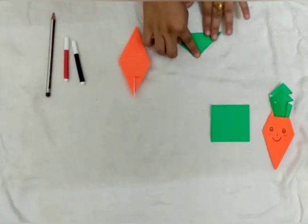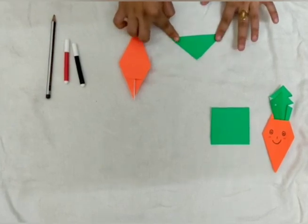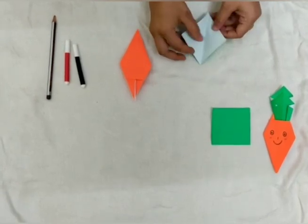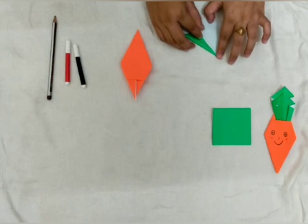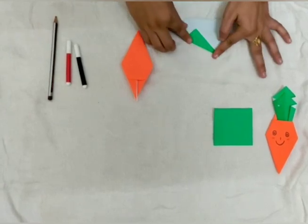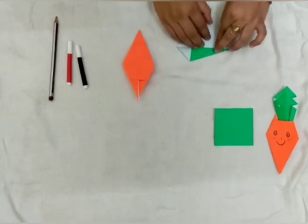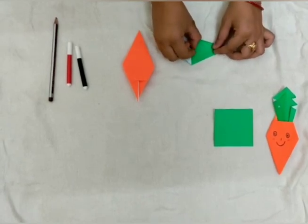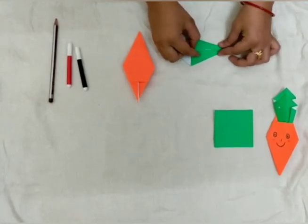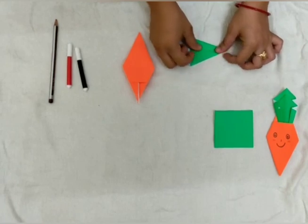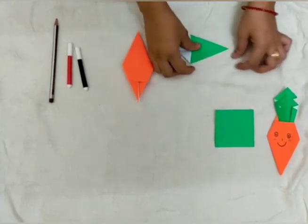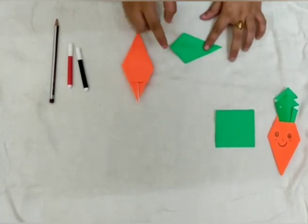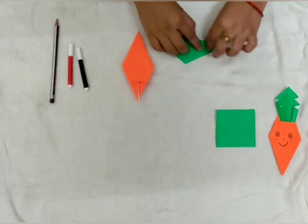We will fold green origami sheet like this. And then like this. Like this. Like this. And this. And from back we will fold again.